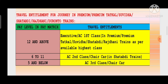Travel entitlement for journey in premium trains - premium, premium tatkal, Suvidha, Shatabdi, Rajdhani, and Duronto trains। Pay level 12 and above: executive and AC first class - highest class available। Pay level 6-11: SC second class and chair car in Shatabdi trains, and SC second class in other trains like Durantos, Rajdhani, Shatabdi। Pay level 5 and below: SC third class and chair car। इस तरह pay level three ways में divide किया गया है - 12 and above, pay level 6 to 11, and 5 and below। यह बहुत important है।